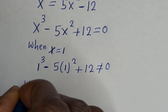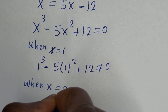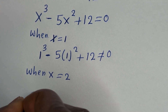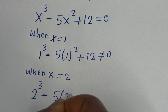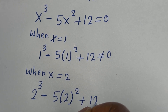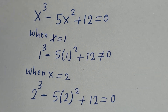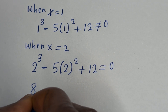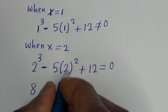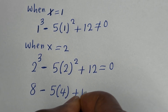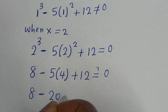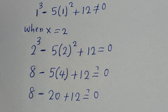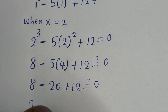When s is equal to 2, we have 2 raised to power 3 minus 5 times 2 squared plus 12. Let's see if it equals 0. 2 cubed is 8, minus 5 times 4 is 20, plus 12. So 8 minus 20 plus 12: 12 plus 8 is 20, and 20 minus 20 equals 0.